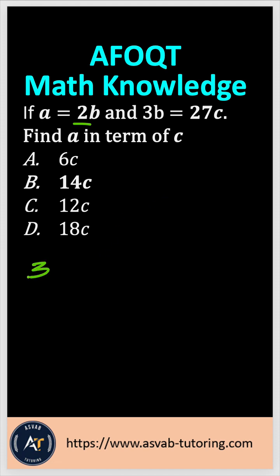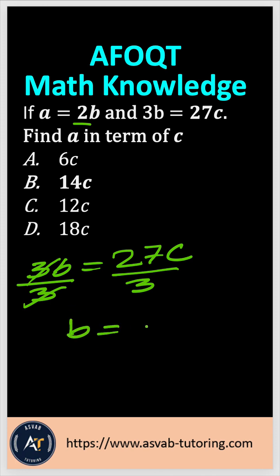So you have first 3B equals 27C. Divide both sides by 3. If we cancel out, that is 3 divided by 3 equals 9C.